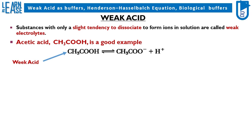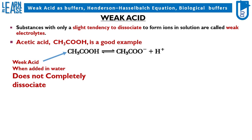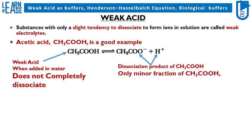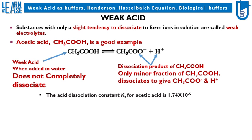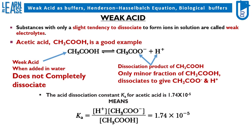CH3COOH when added in water does not completely dissociate, and only a minor fraction of CH3COOH is dissociated. The dissociated ions are CH3COO- and H+. The acid dissociation constant, known as Ka, for acetic acid is 1.74 × 10⁻⁵, which is explained by the standard equation used to measure Ka, the dissociation constant for any acid.